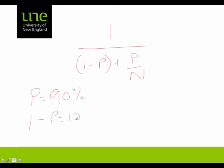And as N increases this term becomes 0, so regardless, infinite number of processes, we end up on 1 over 0.1 which equals 10.